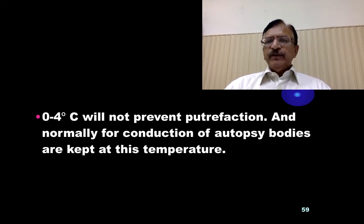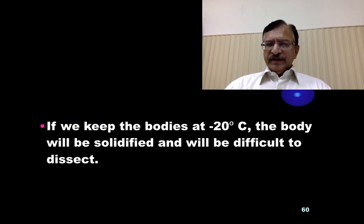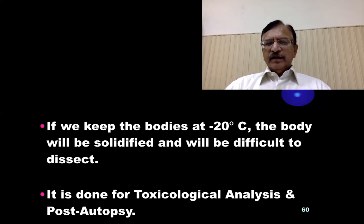0 to 4 degrees centigrade will not prevent putrefaction and is normally used for conducting routine autopsies. For anatomical examination and histopathological examination, minus 20 is preferred. However, if we keep bodies at minus 20, the body will be solidified, losing its cellular detail and becoming difficult to dissect. So for pre-autopsy purposes, bodies are kept at plus 4 degrees centigrade, and minus 20 is for either toxicological purposes or post-autopsy when the body has to be kept after autopsy.